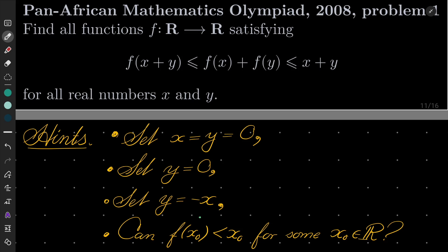So my hints for this problem: first of all, you should set x and y to be 0 and deduce something interesting, then set only y equals 0, x is arbitrary, then set y equals minus x.